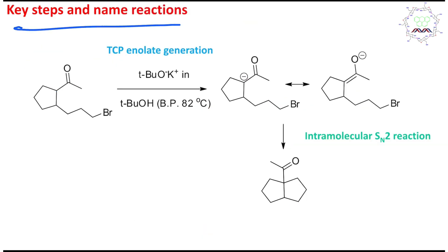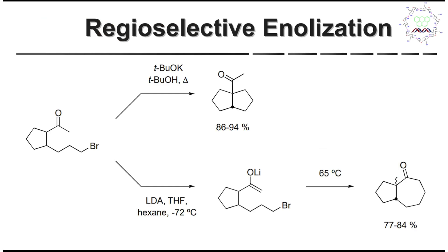This produces a bicyclic five-membered ring ketone derivative. The key steps are: first, TCP enolate generation under refluxing conditions, and second, an intramolecular SN2 reaction. Remember, intramolecular reactions are preferred over intermolecular ones for both thermodynamic and kinetic reasons.